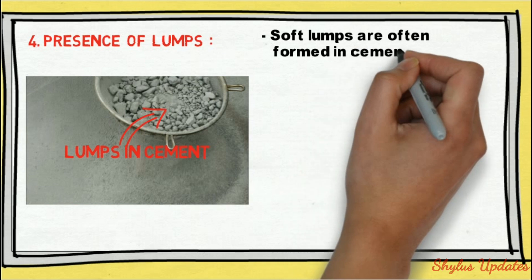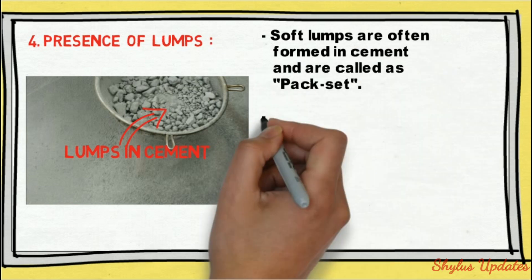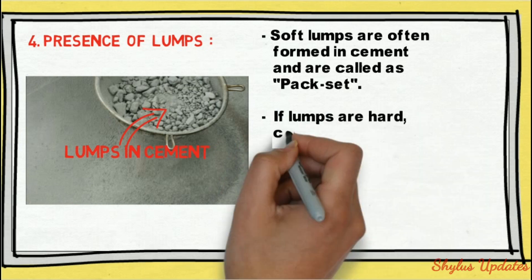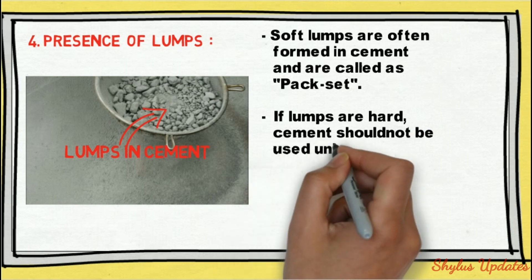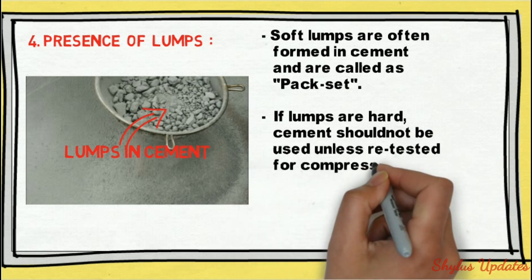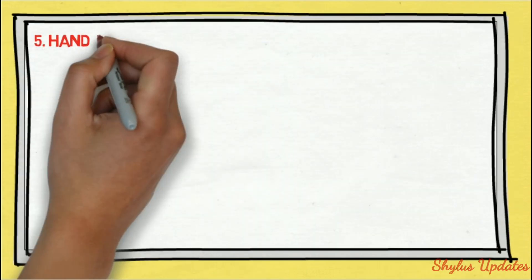Soft lumps in cement are called pack set. If the lumps are hard, cement should not be used unless retested by a compressive strength test. Open one bag and check whether lumps are present or not.